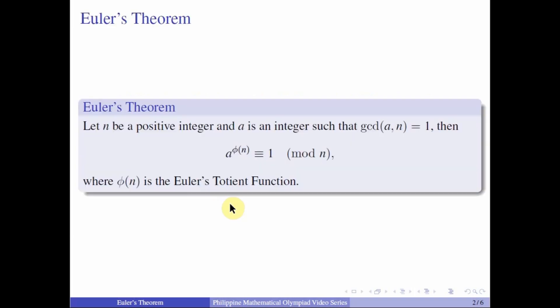Let n be a positive integer and a is an integer such that the GCD of a and n is equal to 1. Then, Euler's theorem states that a to the phi of n is equal to 1 mod n, where phi of n is the Euler's Totient function. Before you proceed to this video, I highly recommend that you watch our video on the Euler's Totient function to learn more about it. Now, let us proceed to solving some problems.